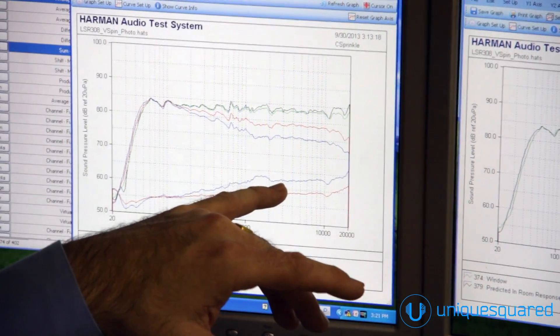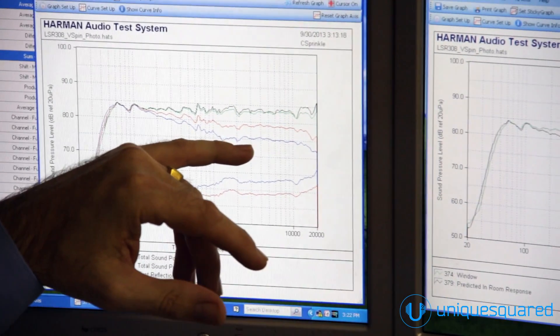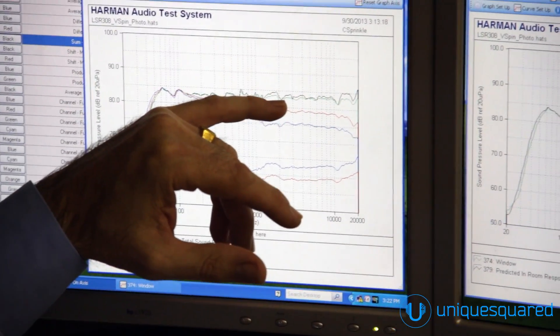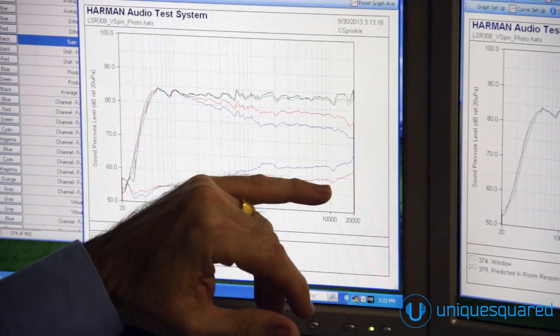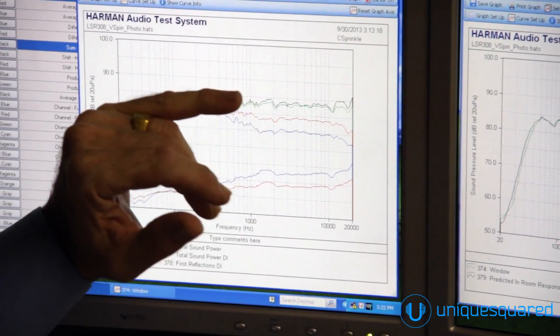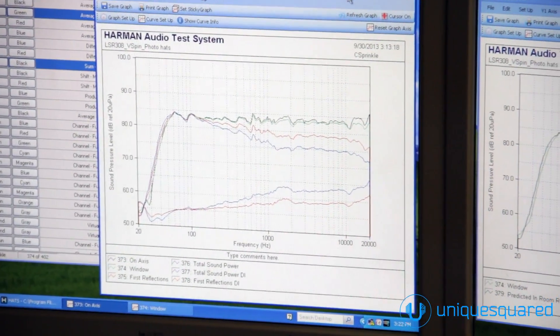The blue curve on the bottom is directivity index, or basically how this blue curve relates to how the sound power relates to the listening window. The red curve is the first reflections directivity index, and how the first reflections relate to that listening window.